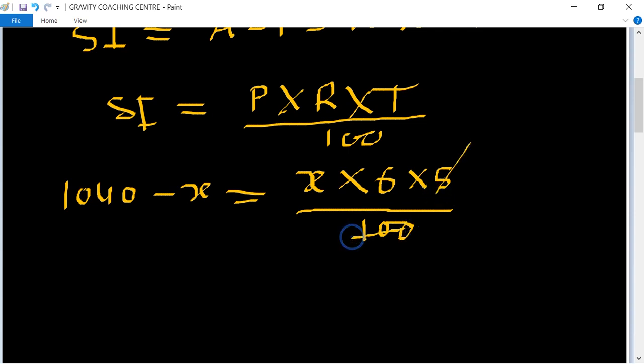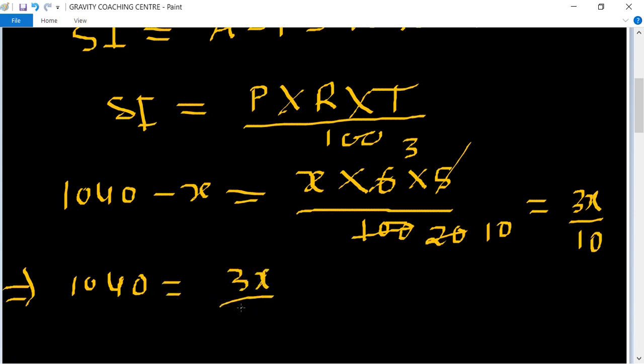So table of 5: 5 to 20, and table of 2: 3, 3 and 10. Implies that 1040, so this one becomes 3x upon 10, so equal to 3x upon 10 plus x.